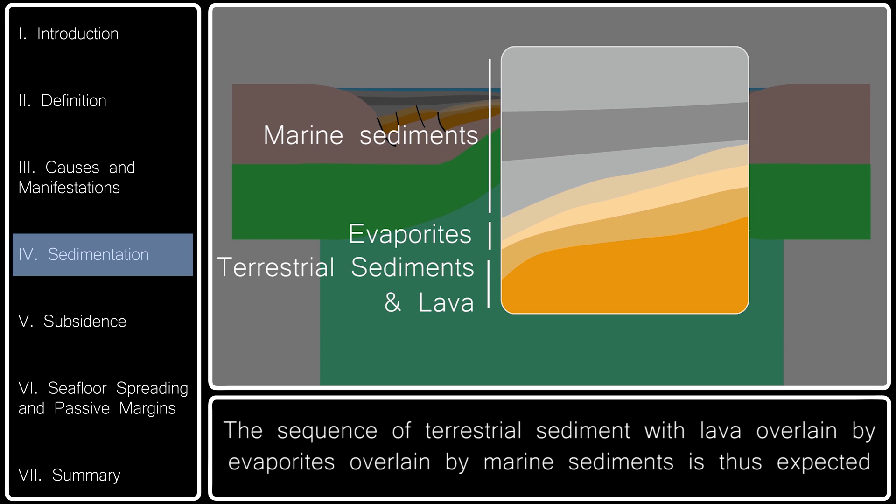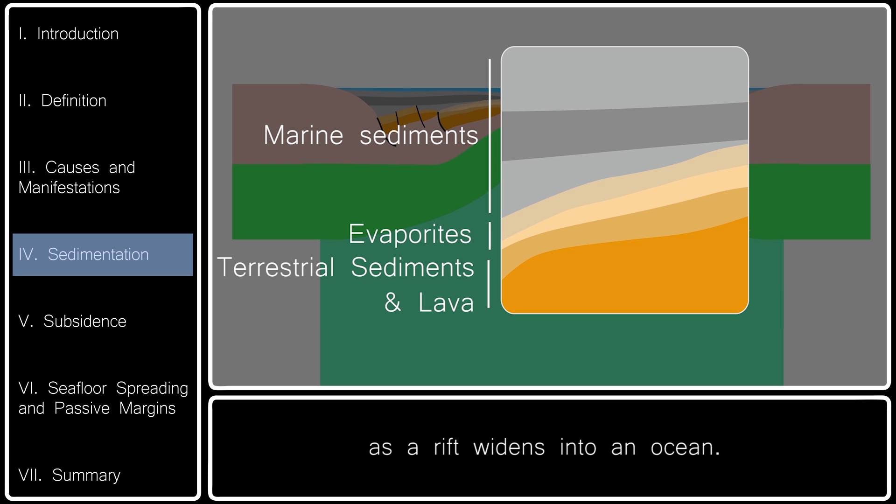The sequence of terrestrial sediment with lava, overlain by evaporites, overlain by marine sediments, is thus expected as a rift widens into an ocean.